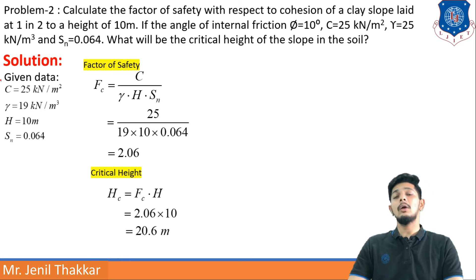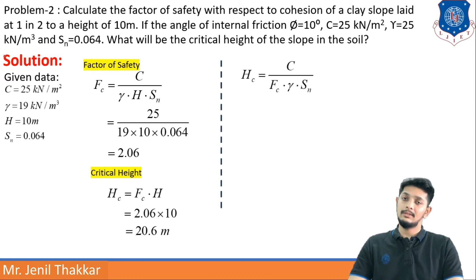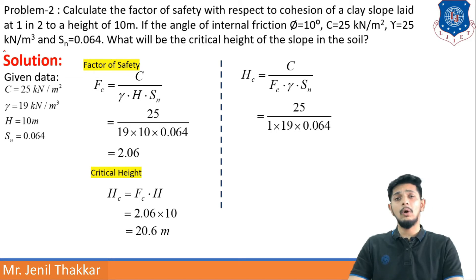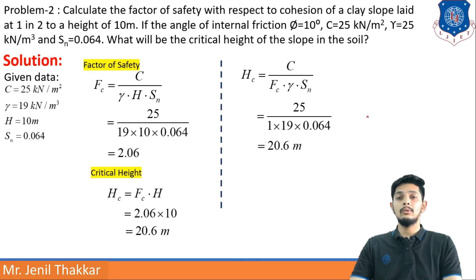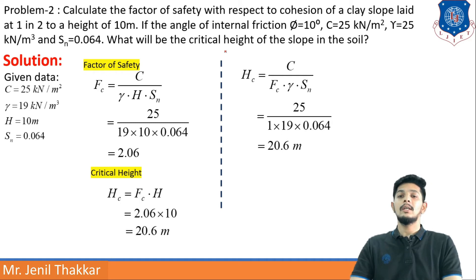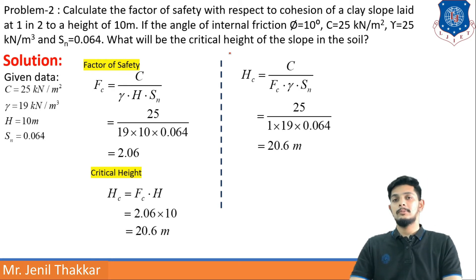Alternatively, the critical height can be found directly using: HC = c / (FC × γ × SN). Substituting all provided values gives HC = 20.6 meters. Note that when finding critical height directly, FC = 1 is used because that is the factor of safety for cohesion at the critical condition.